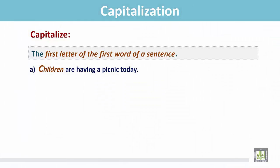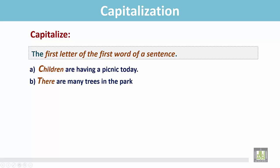Children are having a picnic today. This is the first word of this sentence and the first letter C is capital. There are many trees in the park. The first word is 'there' and the first letter T is capital.